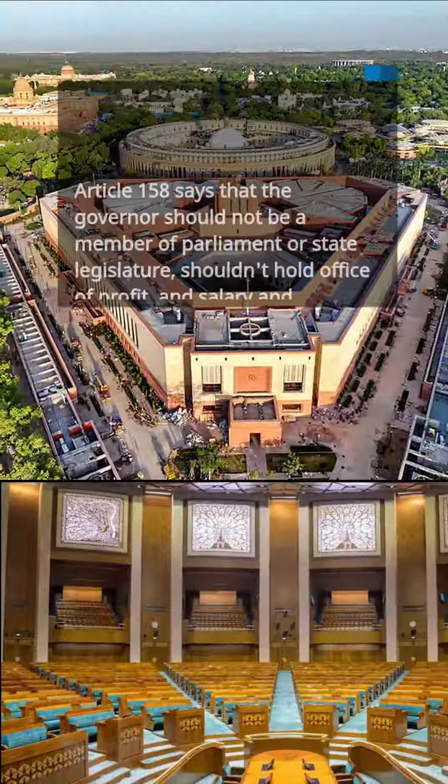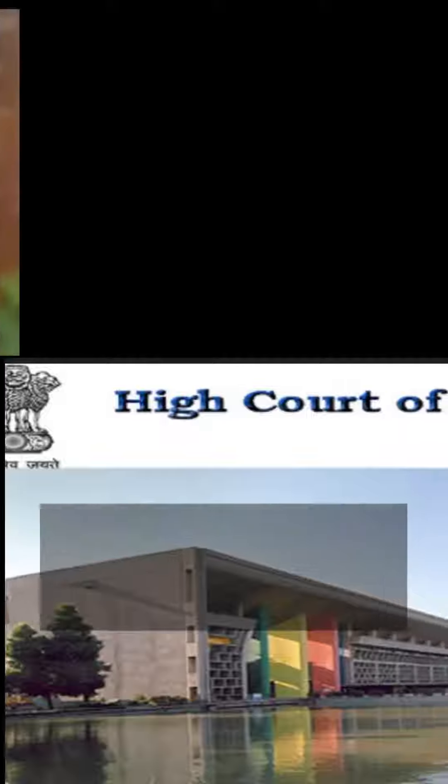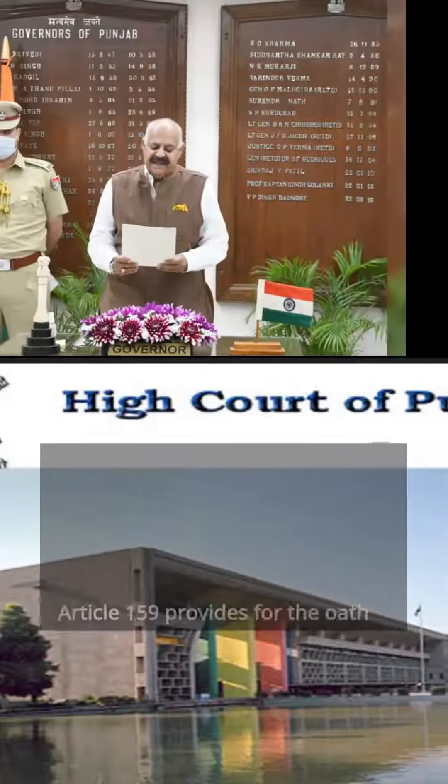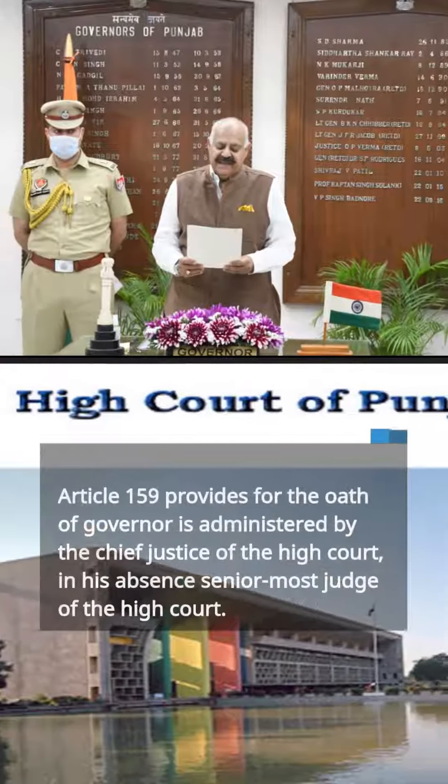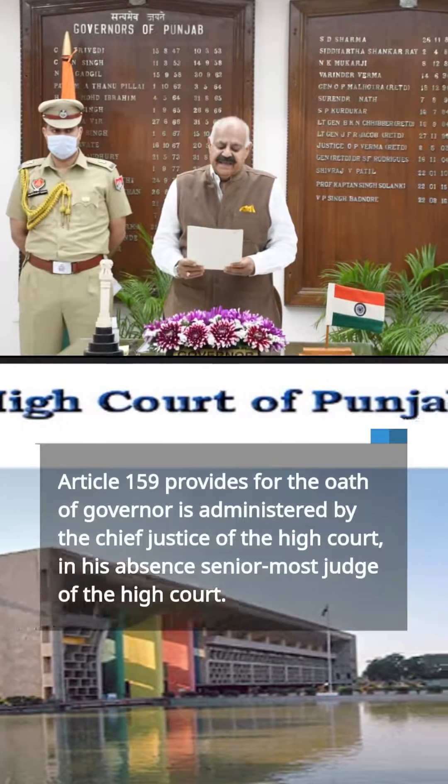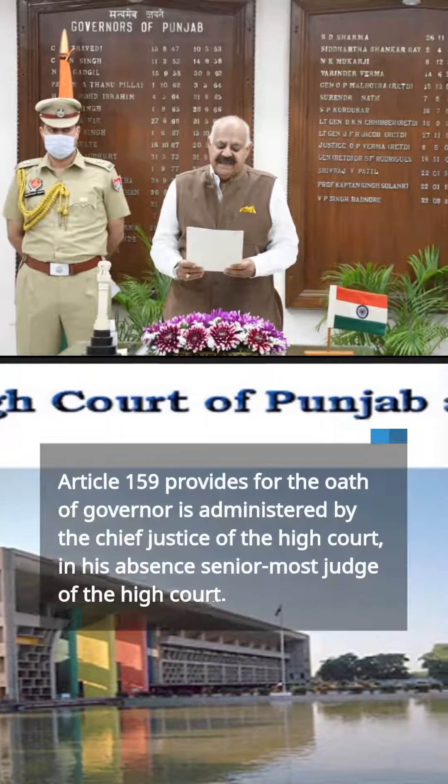Article 158 says that the governor should not be a member of parliament or state legislature, should not hold any office of profit, and the salary and allowances should be determined by parliament by law.